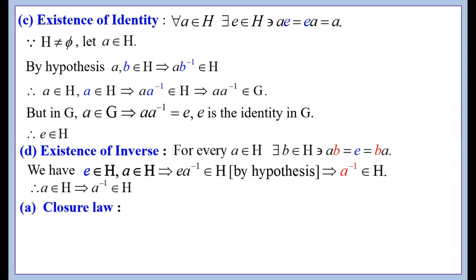Now we are going to prove the closure axiom. Generally we prove closure first, then associativity, then identity, then inverse. But in this theorem, we first proved identity, then existence of inverse, and using these we will now prove the closure axiom.